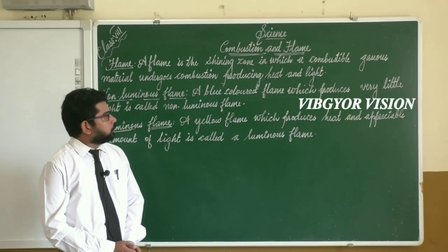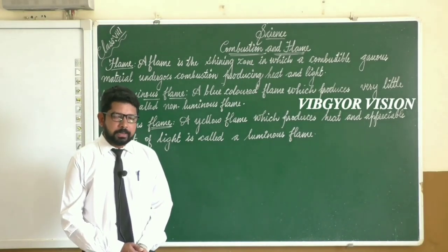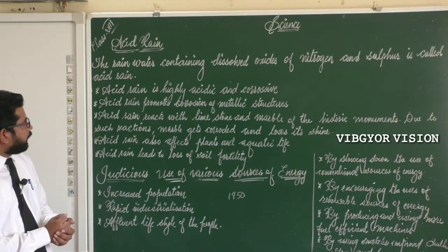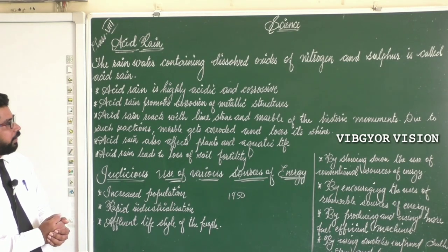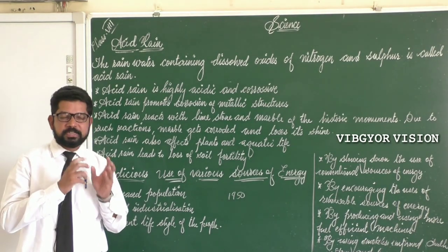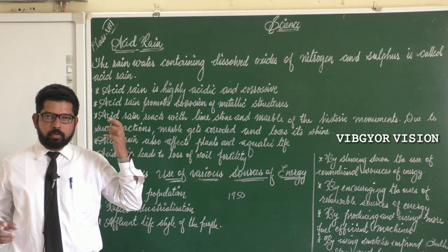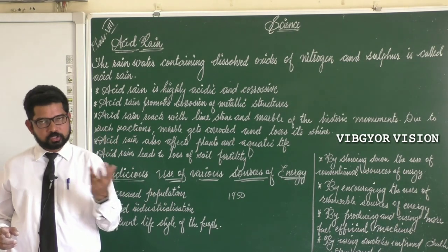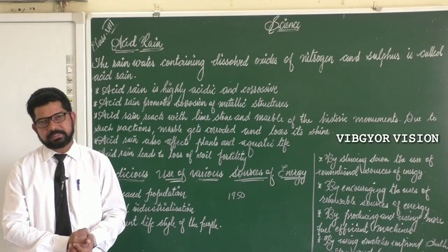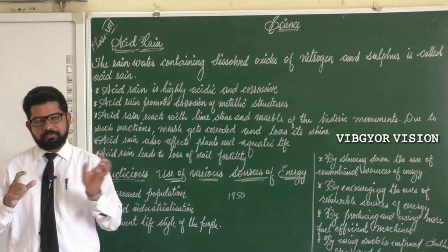In this online science class, we will study about combustion and flame. Now let's study about acid rain. The rain water containing dissolved oxides of nitrogen and sulfur is called acid rain. It may contain sulfur dioxide, nitrogen dioxide, sulfur trioxide, etc. Acid rain contains dissolved oxides of sulfur and nitrogen.